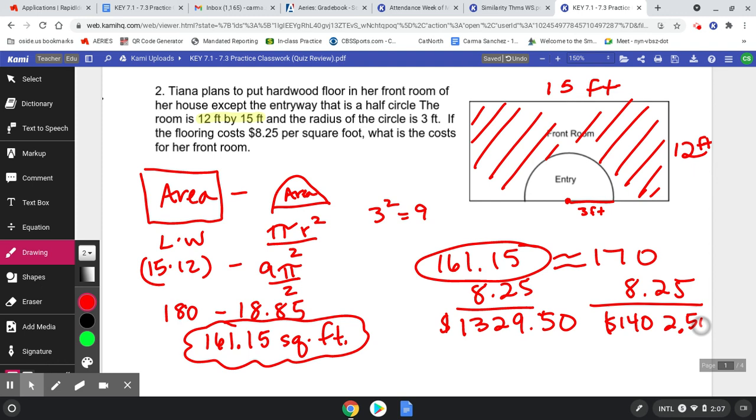$1,402.50. I'm going to put a range from anywhere from $1,329.50 to $1,402.50, so that we're leaving space for that extra flooring just in case. We can't just buy this exact amount of flooring - that's probably not going to work in real life.